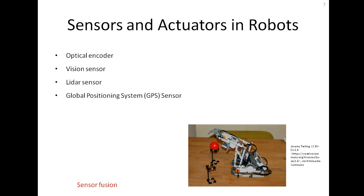The Global Positioning System (GPS) sensor is commonly used in outdoor mobile robot applications. It tells the position coordinates of the robot with respect to the global frame.